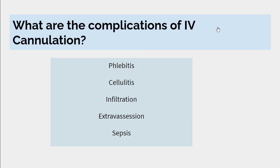What are the complications of IV cannulation? They are phlebitis — infection and inflammation of a vein; cellulitis; infiltration — proliferation of fluid into surrounding tissue; extravasation — damage to the surrounding tissue; and sepsis — spreading of infection into systemic circulation.